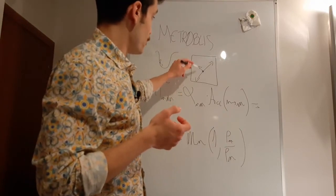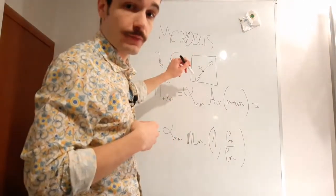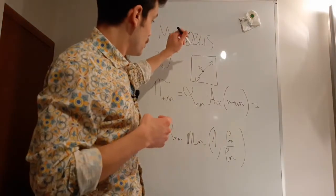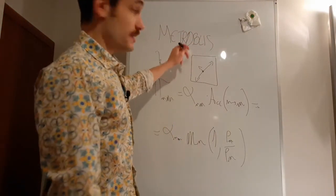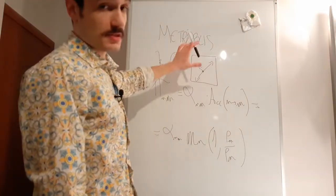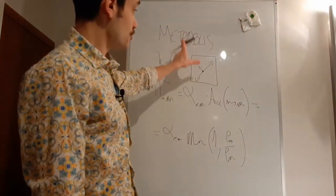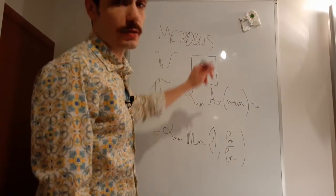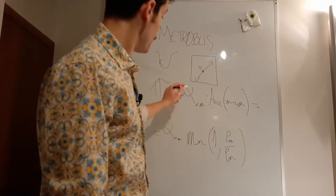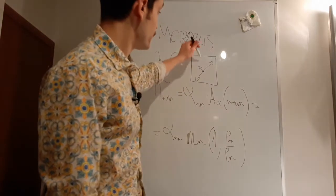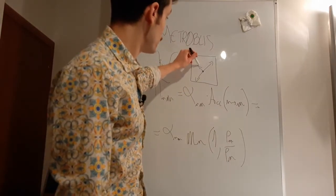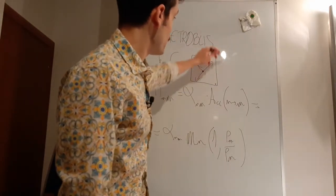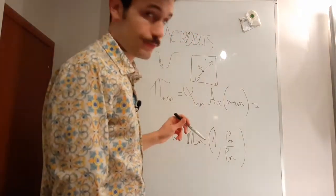In a completely random way, we choose a displacement vector for our trial move. And of course, there is a certain probability for this to happen. In this most common case, it's a uniform probability in a square or a circle. That's alpha — it's simply the probability of choosing this particular displacement, while all others have probability zero.